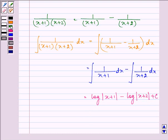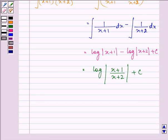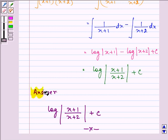And it can also be written as log of x plus 1 over x plus 2 plus c. So the required answer is log mod x plus 1 over x plus 2 plus c. This is the required answer. Hope you understood the whole concept of partial fractions well and have a nice day ahead.